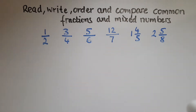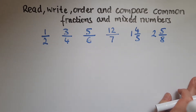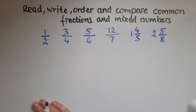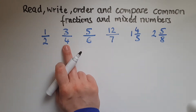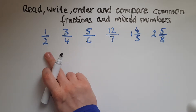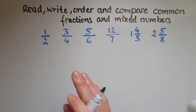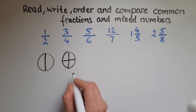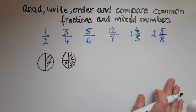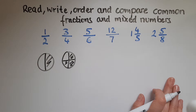Now we're going to try and compare and order them. In order to be compared, they need to look similar to each other. At the moment, we've got half and three quarters. We know how these look and it's easy to compare them. I know that three quarters is bigger than half because of what they mean. At this level, we're supposed to know that.